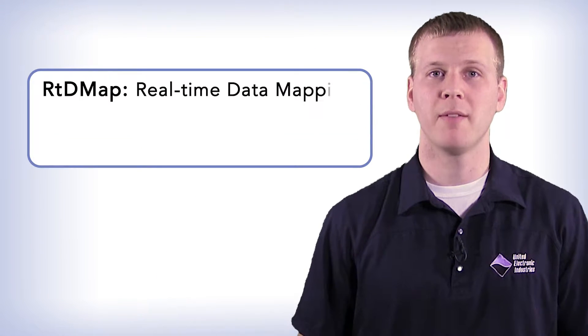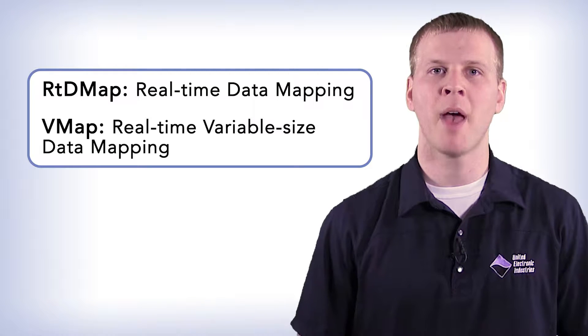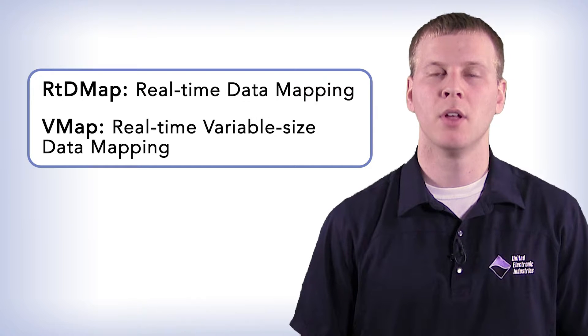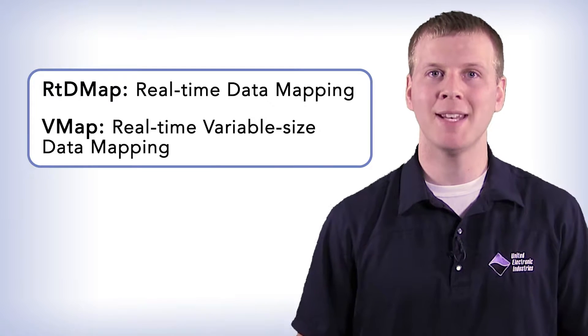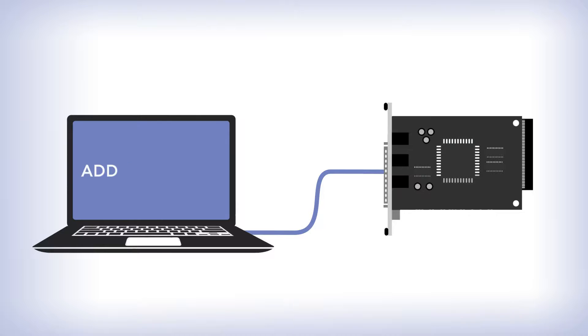When using a UEI I/O board, you configure the channels and then select and use a data acquisition methodology. RTDMAP and VMAP are software constructs for high-speed memory map data acquisition. DMAP will return one data point per channel, and VMAP will return many data points per channel. With either one, you assign a physical channel on an I/O board to a software channel and the memory map through a single API call.